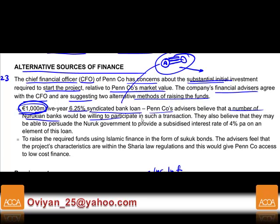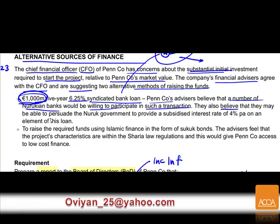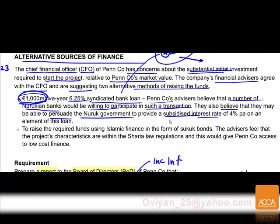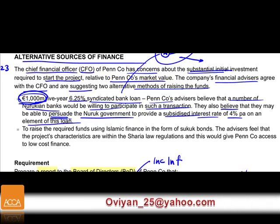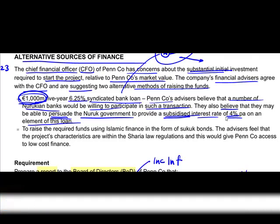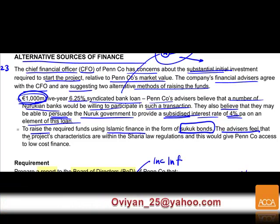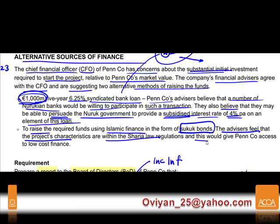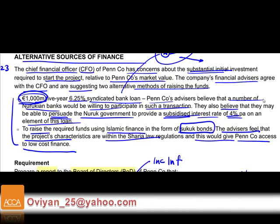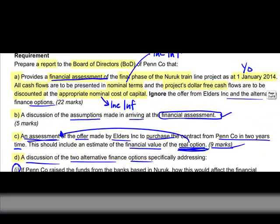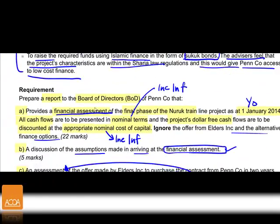The second alternative is to raise funds via Islamic finance in the form of a sukuk bond, which is very popular today. Penn's advisors believe the project characteristics comply with Sharia law regulations, which would give Penn access to a lower cost of finance. This is the last major section of the question — we'll examine both financing options in detail as we work through the report.